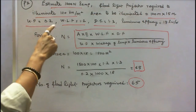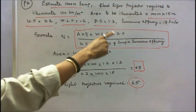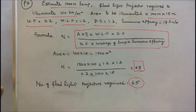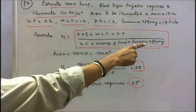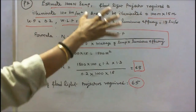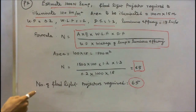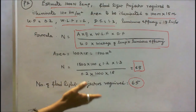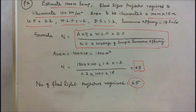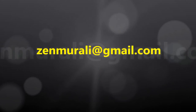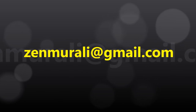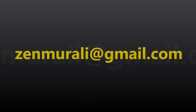Substituting all the values into the formula, the number of floodlight projectors required is equal to 65.